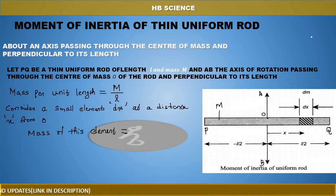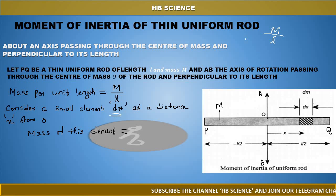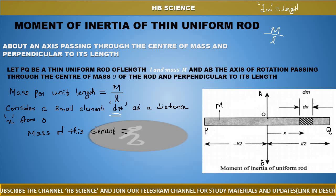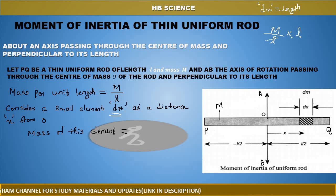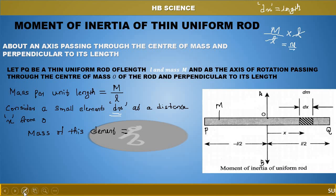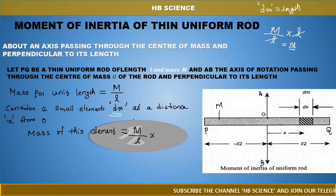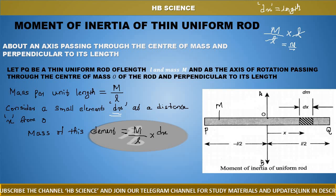The mass per unit length is equal to M divided by L. Consider a small element of length dx at a distance x from the center. The mass of this element dm is equal to M by L into dx, since dx is a small length.